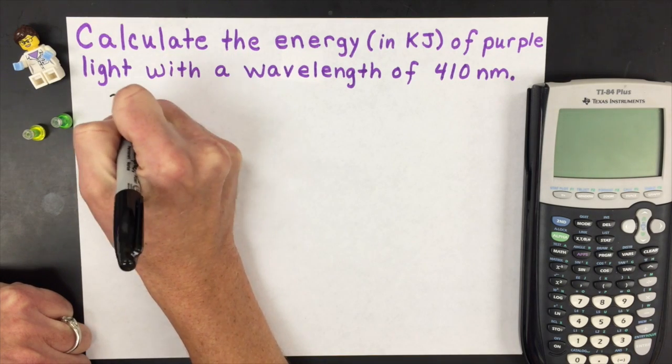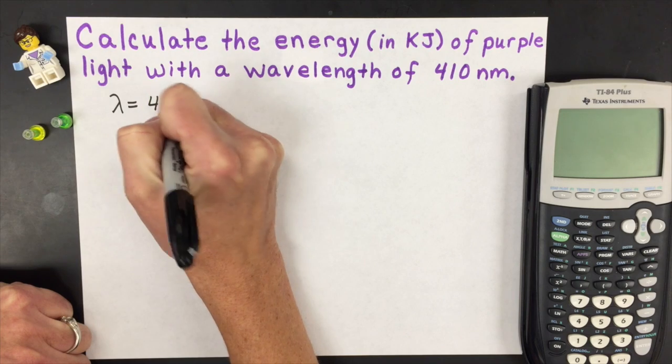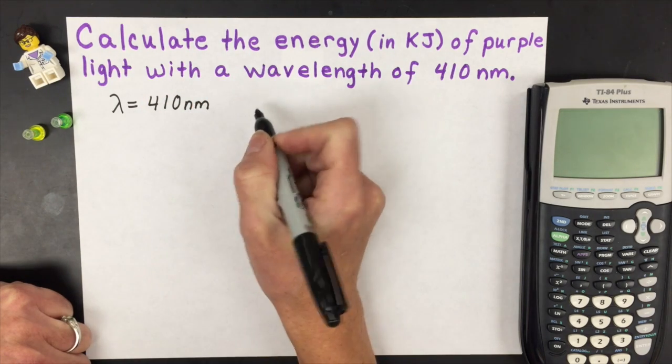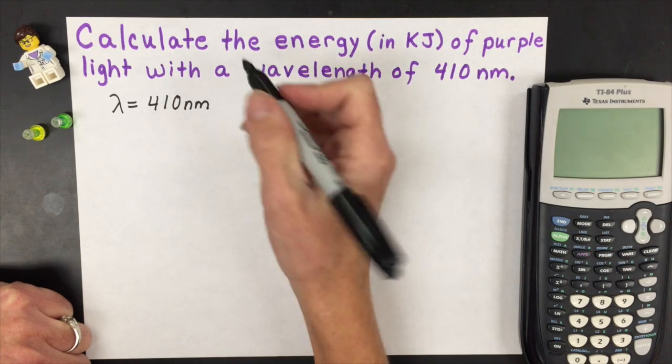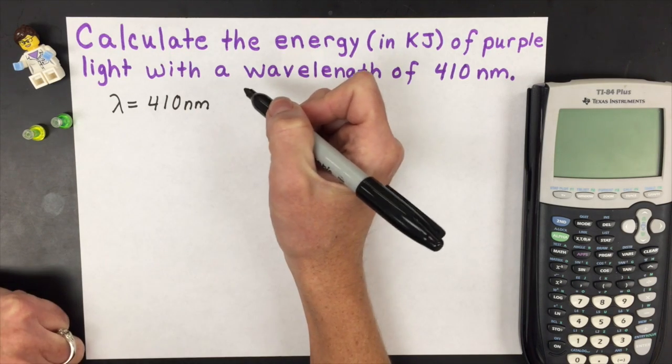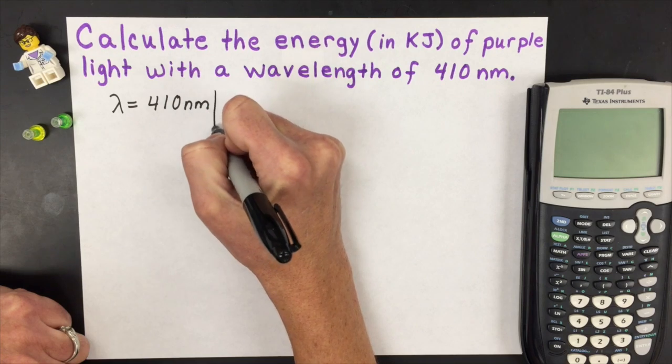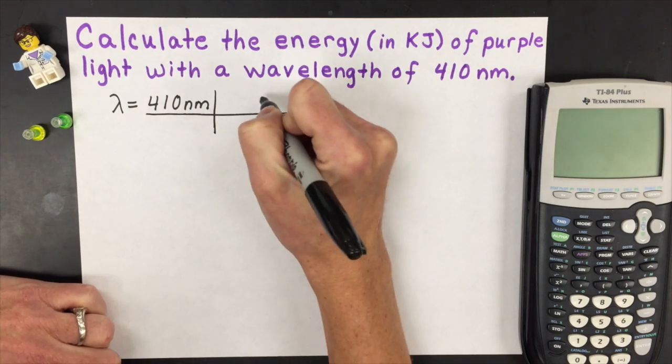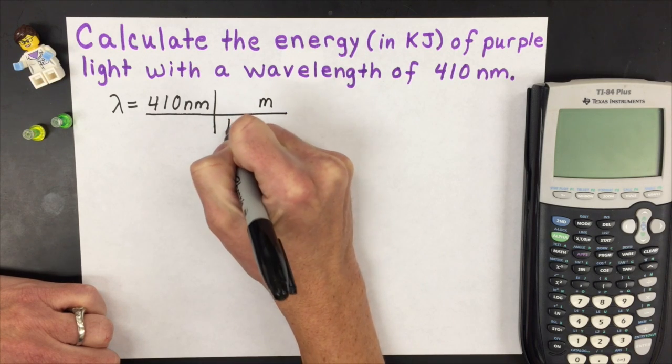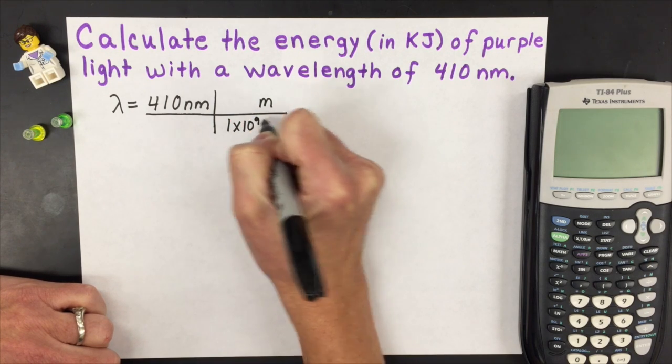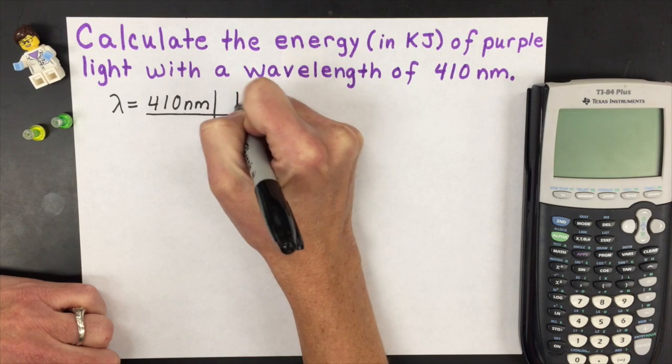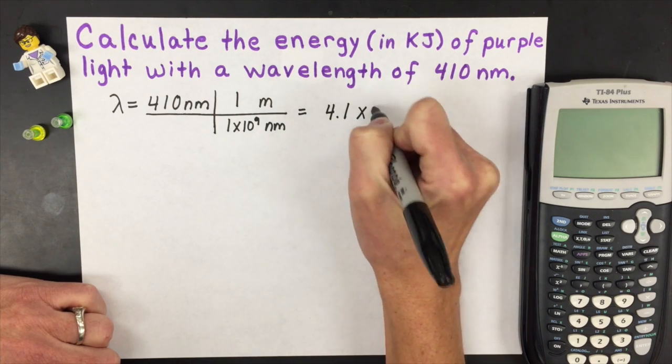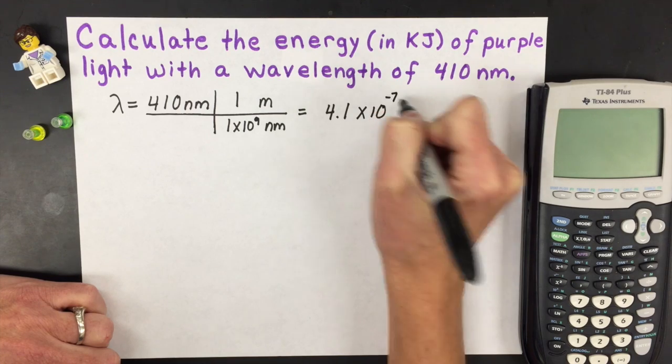Again the first thing I'm going to do is write down your given, which is that we have a wavelength of 410 nanometers. And since I know I typically have to have all of my units in either meters, joules, or seconds, I'm just going to convert my wavelength immediately into meters. There are 1 billion nanometers in 1 meter. So my wavelength is actually 4.1 times 10 to the minus 7th of a meter.